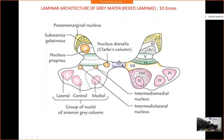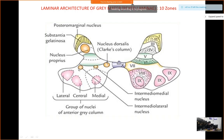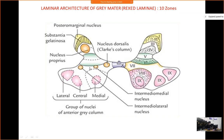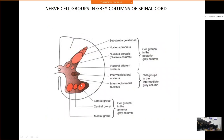In Rexed laminae: area 1 is the posteromarginal nucleus; area 2 is the substantia gelatinosa; area 3 is the nucleus proprius; areas 4 and 5 are the dorsal column. Area 7 includes the intermediomedial nucleus, intermediolateral nucleus, and Clark's column. Areas 8 and 9 include all nuclei of the anterior horn. Area 10 includes the area around the central canal. Designating them numerically makes it easier to identify areas of degeneration or regeneration in experiments.